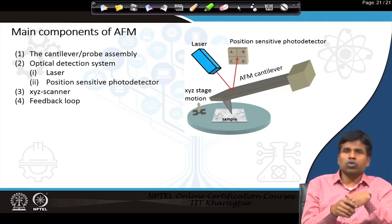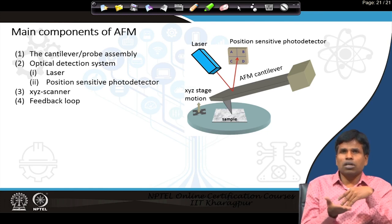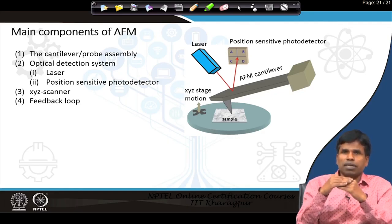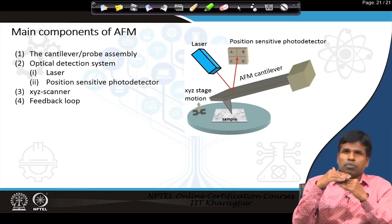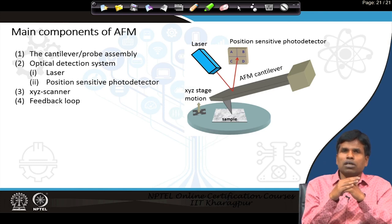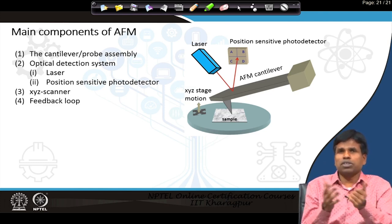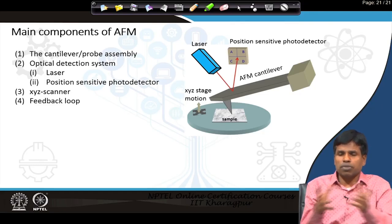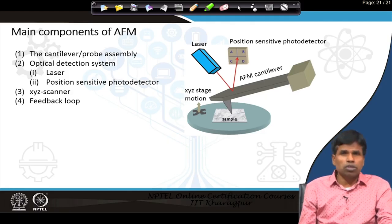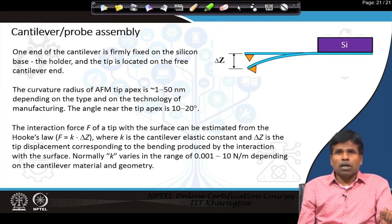Similarly, we have an XYZ scanner. The sample can be moved in different directions — the tip can be brought closer to the sample, or the sample can be taken upward towards the tip. Then we have the feedback loop, which is an electronic system that controls everything: positioning, movement, etc. These are the four major parts of the AFM system, but the heart of the AFM is the cantilever probe assembly.